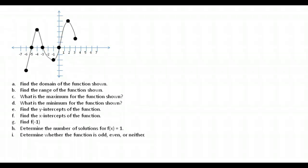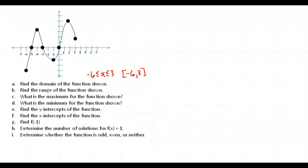So our domain is only from negative six to positive three. I'm going to write all of these in interval notation. The way you'd normally write it is: x is greater than or equal to negative six and less than or equal to three. In interval notation it looks like this: [-6, 3]. The square brackets tell me that I include negative six and include three.